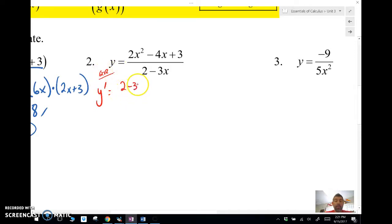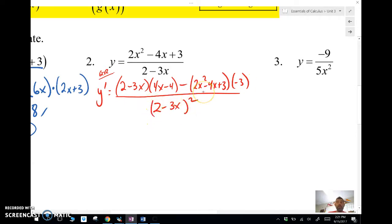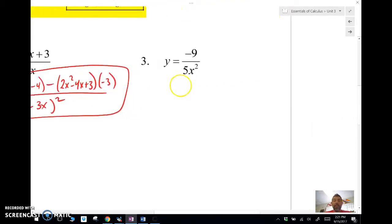Low d high, derivative of the top, 4x minus 4, minus high d low, negative 3, derivative of the bottom. Square the bottom and away we go. We're going to leave this guy like that. That's just too much work to try to simplify that, so we're going to leave it.